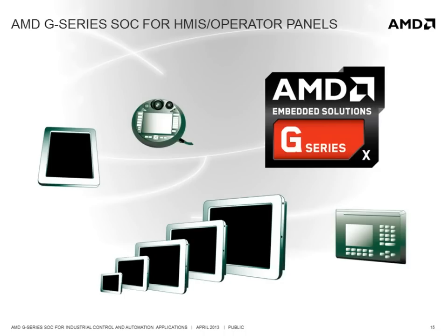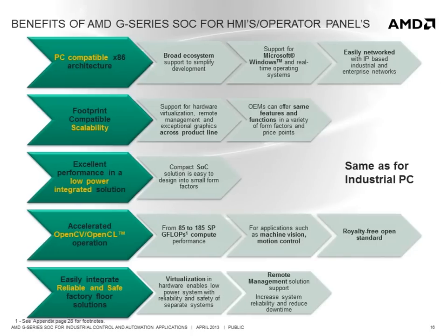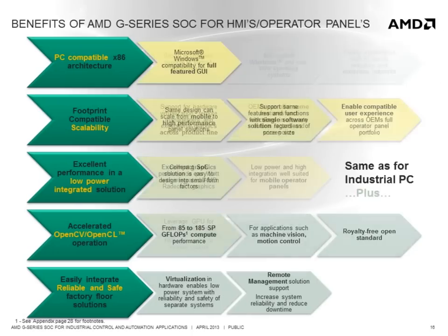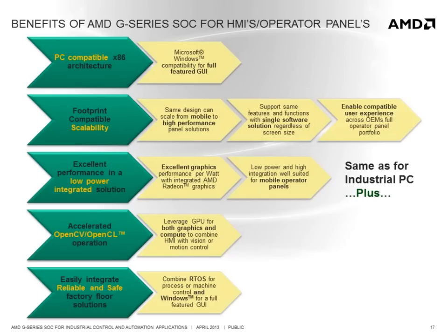The graphics performance of the AMD G-Series SOC naturally makes it an excellent solution for HMI and Operator Panel applications. Its PC compatibility means that you can run a full Windows operating system, enabling a full-featured graphical user interface. The scalability enables a single architecture to scale from mobile to high-performance operator panels, offering the same features and functions based on the same software solution, regardless of screen size and resolution, delivering high-performance graphics, 3D, and hardware video decode. This enables a compatible user experience across an OEM's full Operator Panel portfolio. It delivers excellent graphics performance per watt in an integrated SOC, making it well-suited for mobile Operator Panels. By leveraging the GPU for a combination of graphics and compute through OpenCL and support for hardware virtualization, it facilitates the integration of motion control or vision functions into Windows-based Operator Panels.